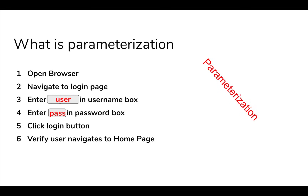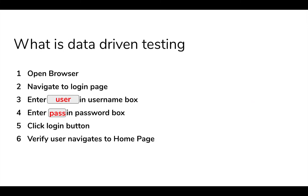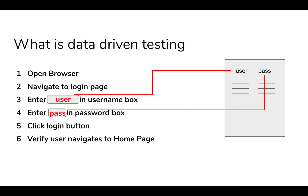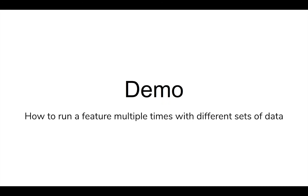Parameterization is the process where we add variables and refer values from those variables in our test. Once we have done parameterization, we can refer the values for these variables from any external source or data file — like a CSV file, an Excel file, or an external script. We can also have multiple sets of data; if I have three sets, the test will run three times for different values. This process, where we are fetching data from an external source and the test runs as per that data, is called data-driven testing.